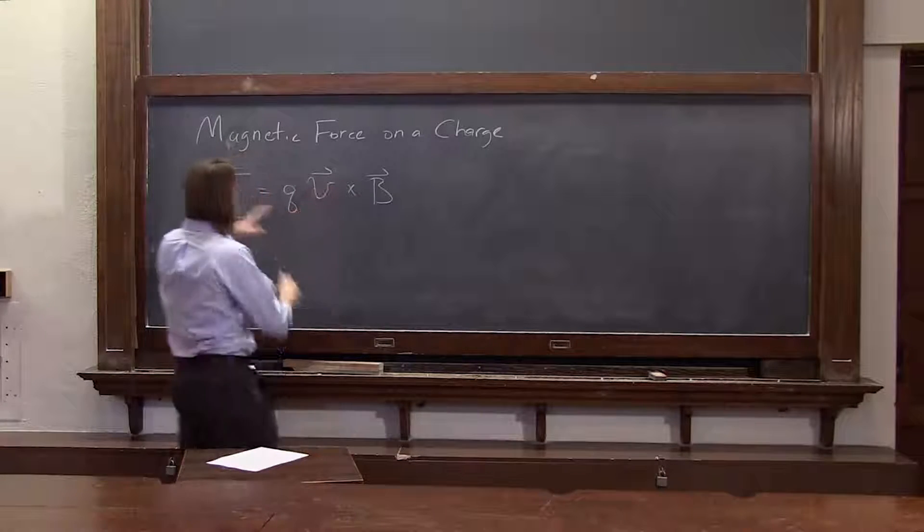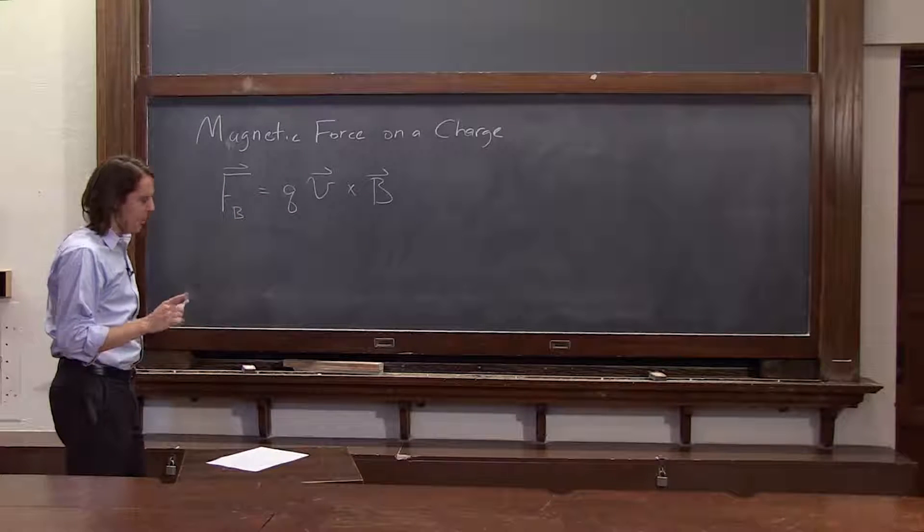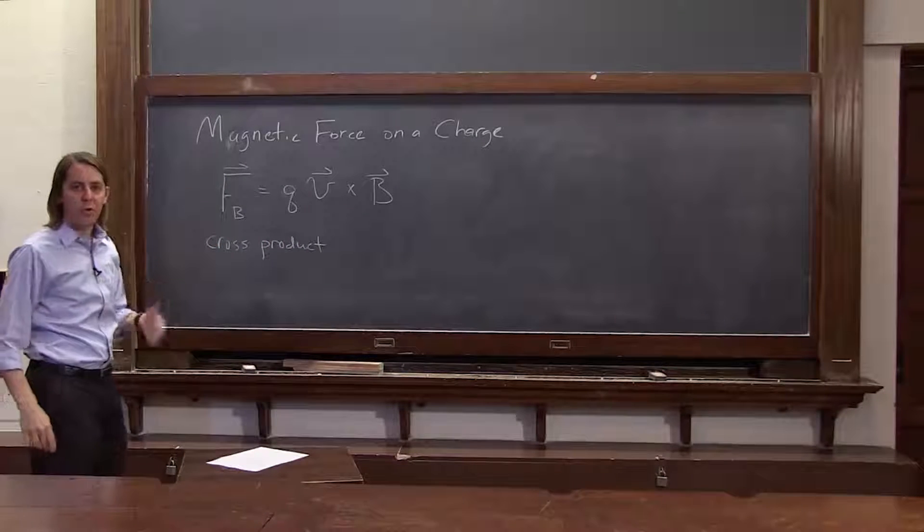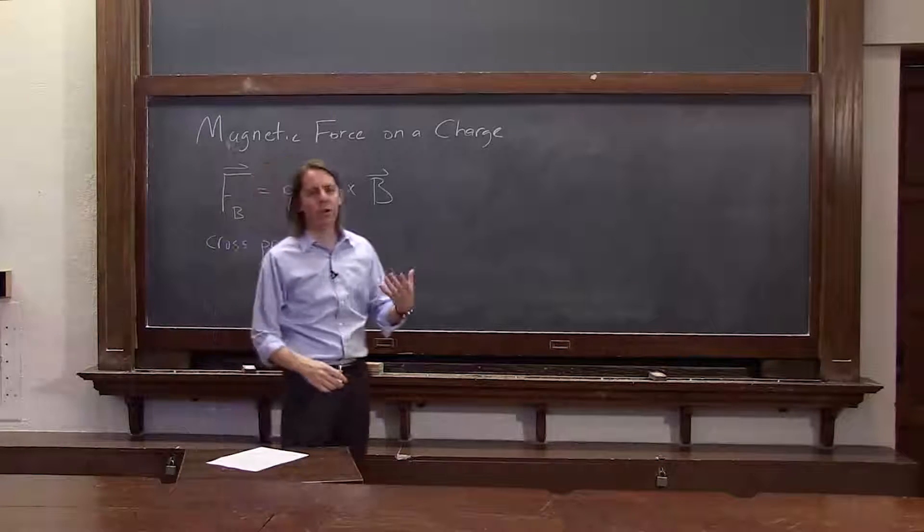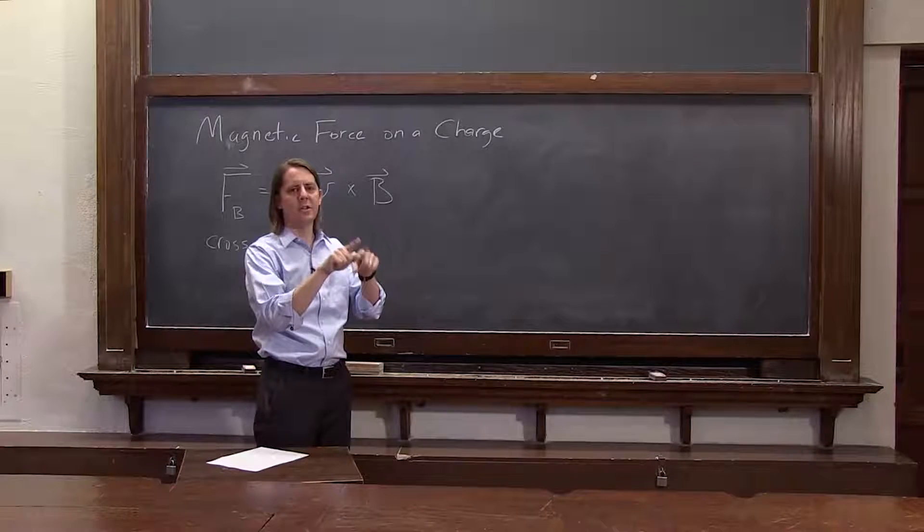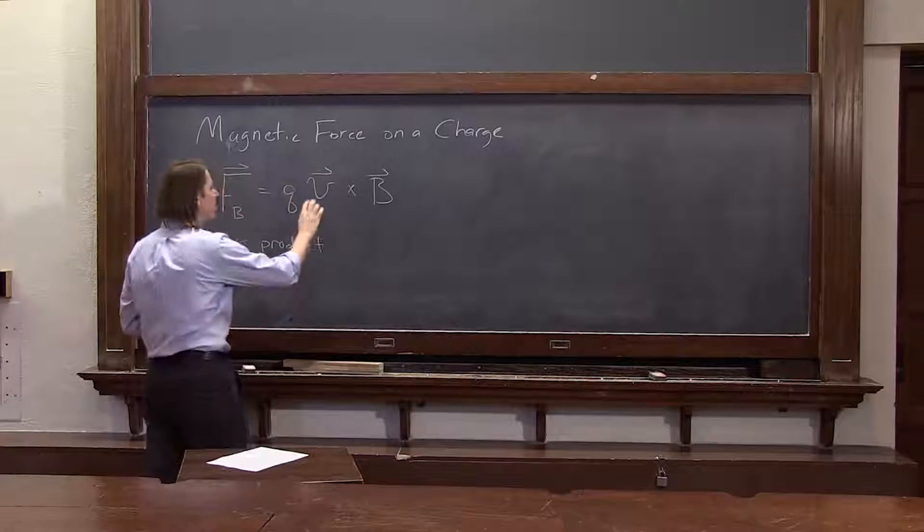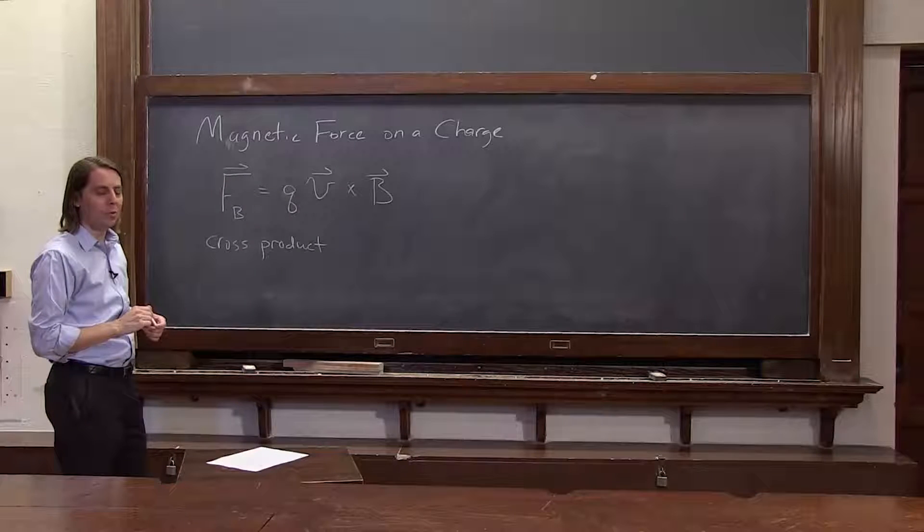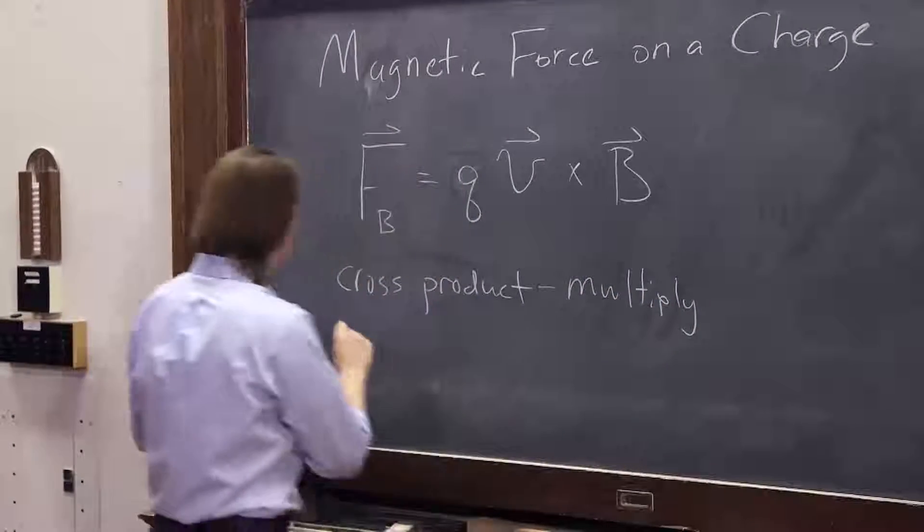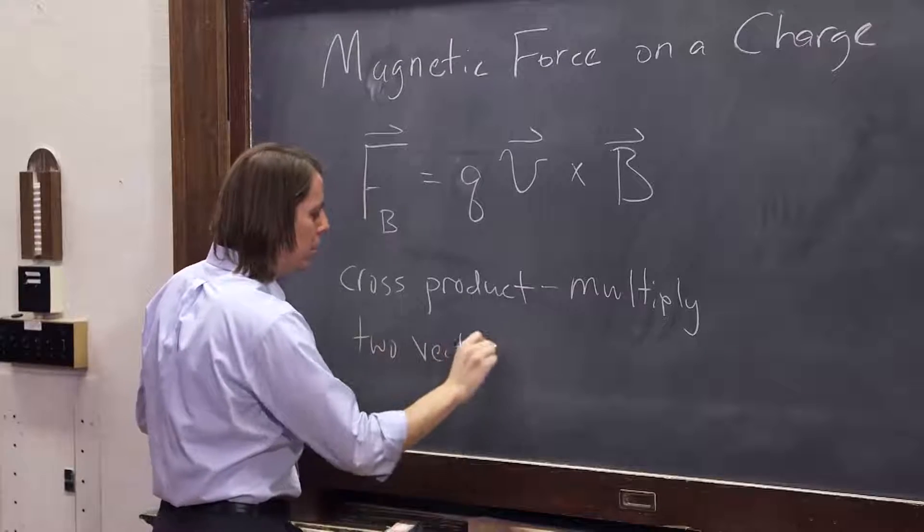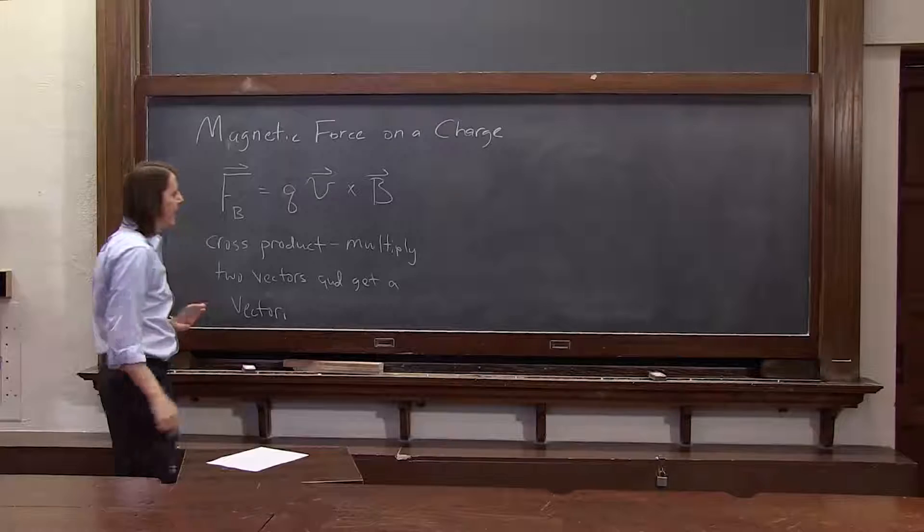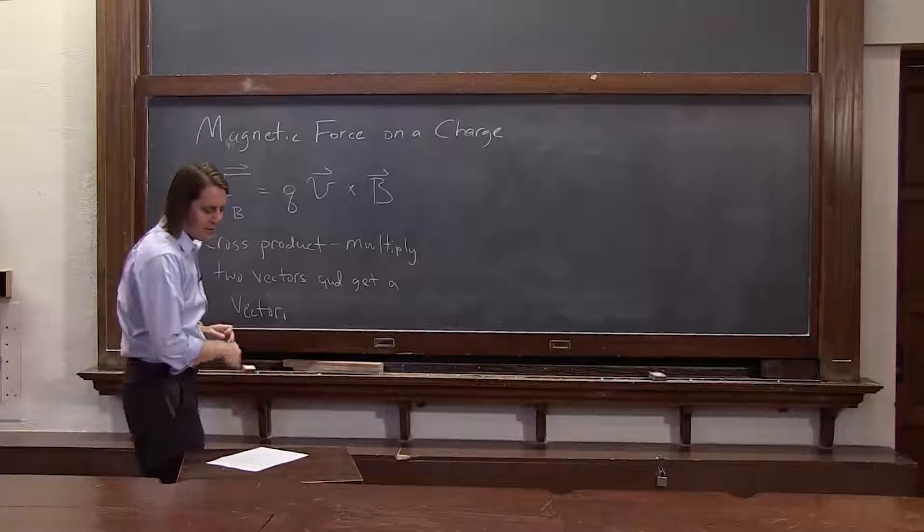If you have a charge moving in a magnetic field at some velocity, this is the force you will experience. The cross product here is a way to multiply vectors we haven't used yet. We've talked about the dot product to get the amount of work something does. That's really how much these forces are along each other and it gives you a scalar. But there's times when we need to multiply two vectors and get a vector. That's what the cross product does. It's a way to multiply two vectors and get a vector back. But it's also harder than the dot product.